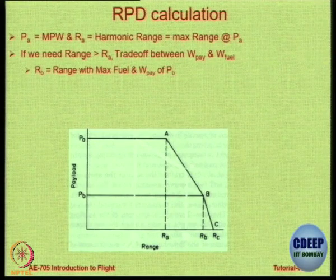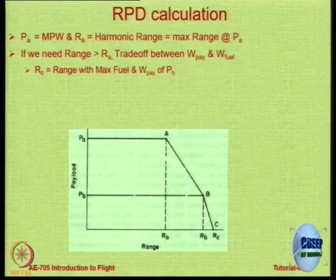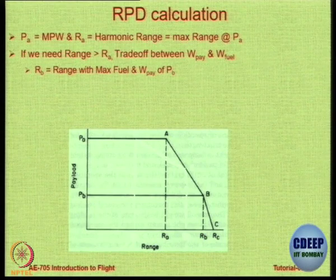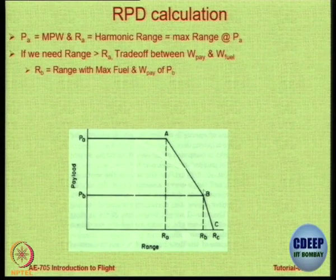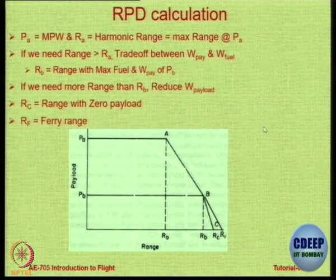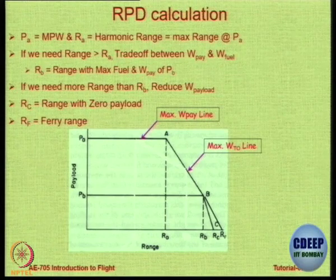At point A you cannot add more fuel because you have already hit maximum takeoff weight. If you want to travel further you have to reduce payload — trading payload for fuel along line A to B. At point B the fuel tank is full but the payload bay is not full, and you have hit maximum takeoff weight. After that you go along line B to C. Some people note the aircraft is lighter so it travels more distance — reducing payload further gives line B to RC — but normally we assume this line is vertical and point C is the theoretical ferry range.